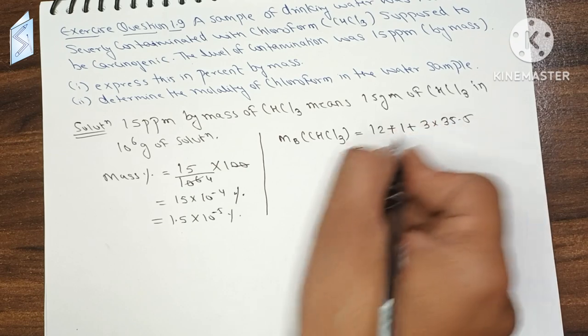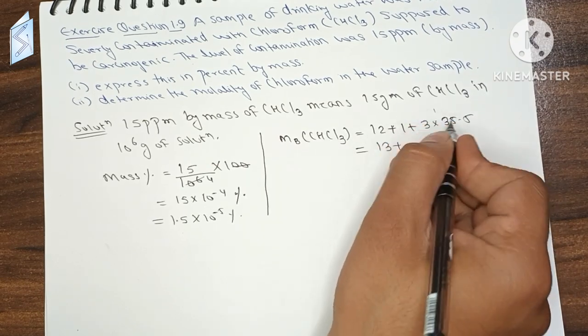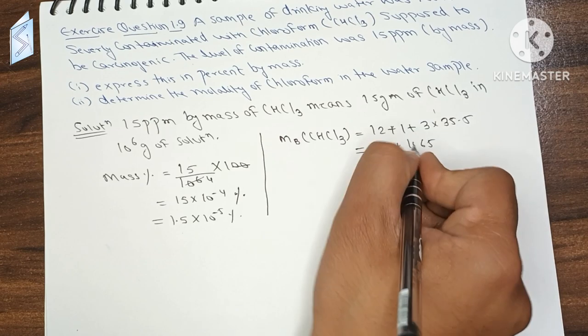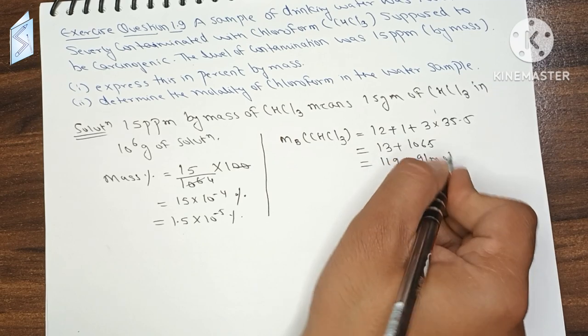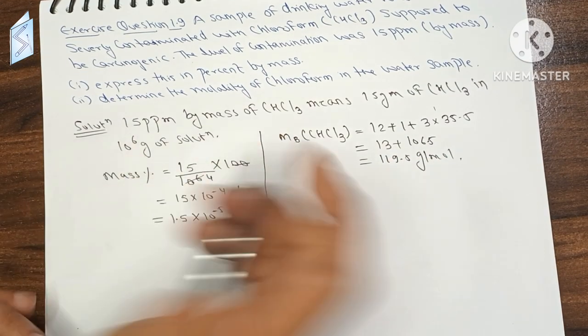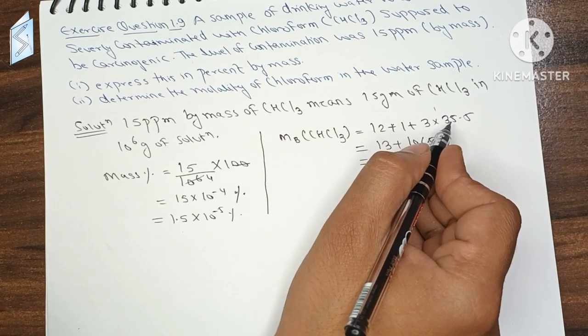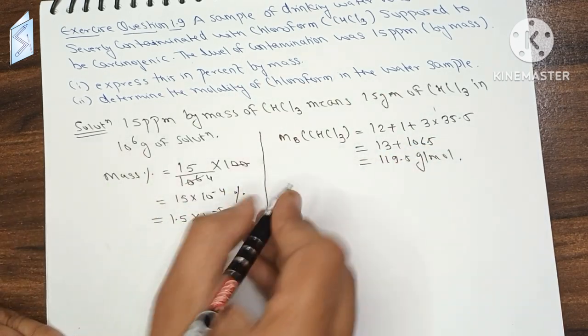So, 13 plus 3 times 35.5 is 106.5, giving us 119.5 grams per mole. This is the molar mass of chloroform.